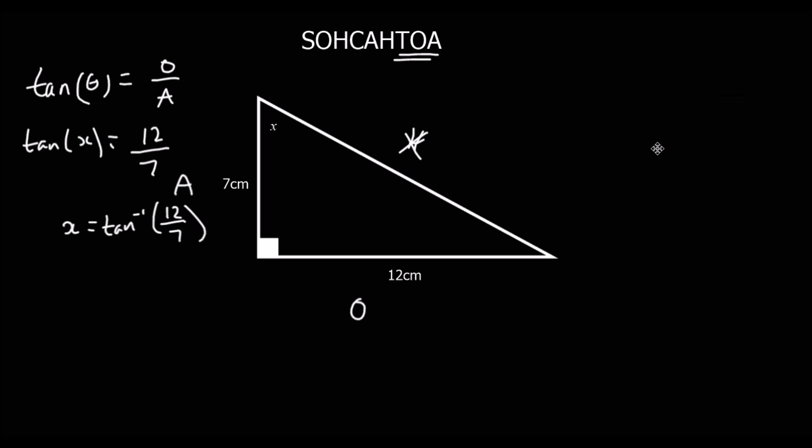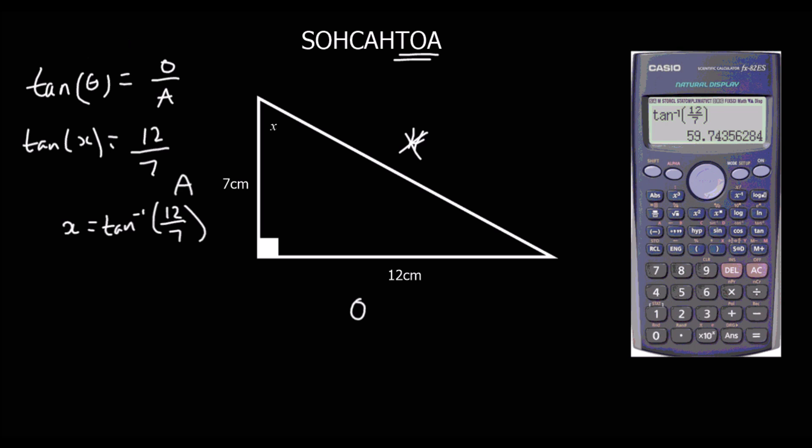That goes in the calculator. And to 1 decimal place, I've got 59.7. So, 59.7 degrees.